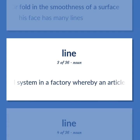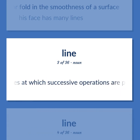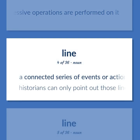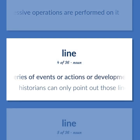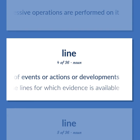Mechanical system in a factory whereby an article is conveyed through sites at which successive operations are performed on it. A connected series of events or actions or developments. Historians can only point out those lines for which evidence is available.